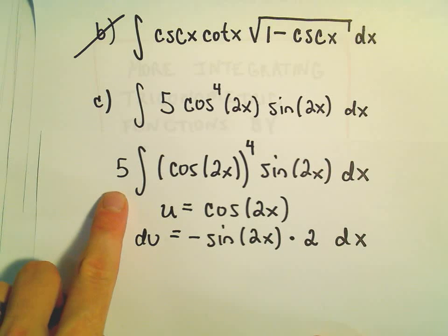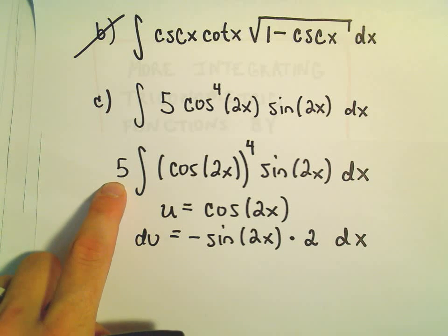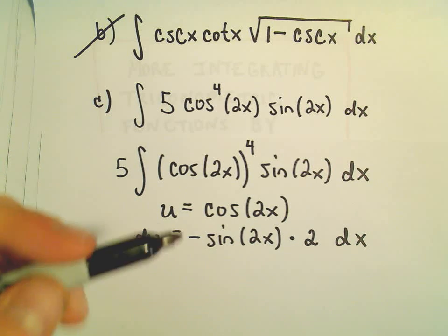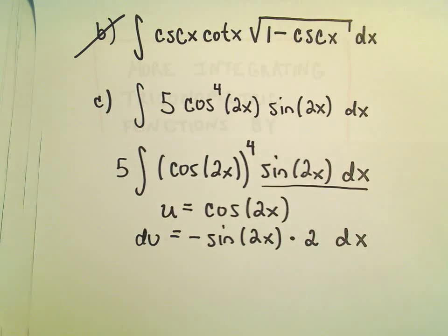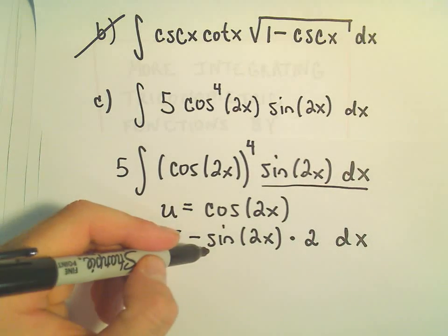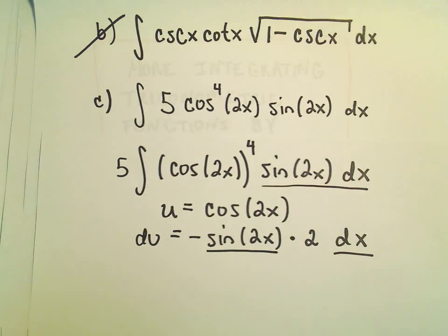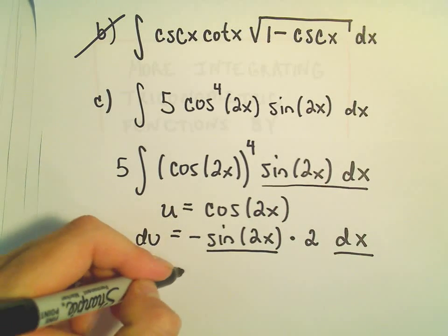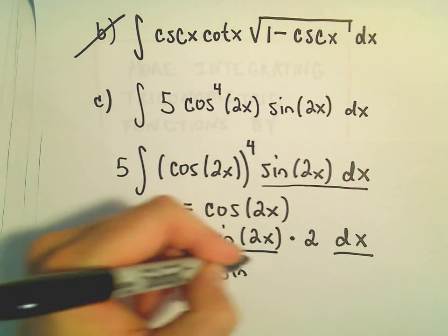Alright, so the 5's outside, I'm just not even going to worry about it. But I'm thinking, okay, there's a sine 2x dx in here that I want to replace. Well, here's the sine 2x dx in our problem. So really, there's an extra negative 2 that I sort of don't want in there.